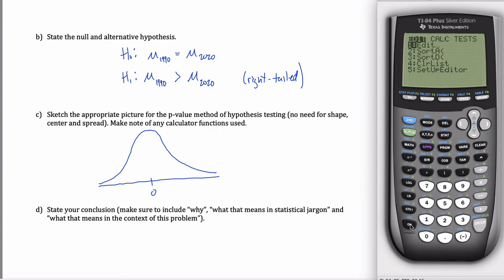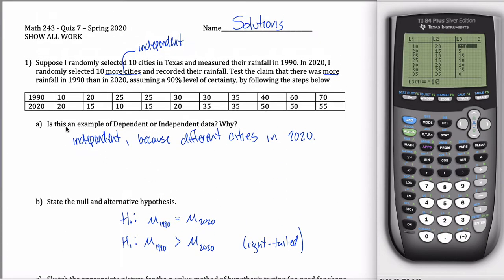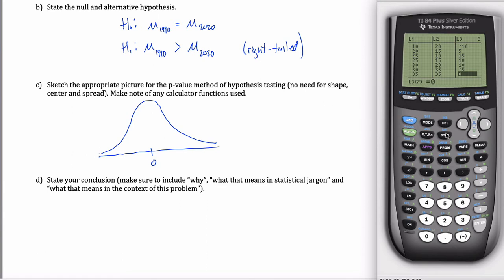What I'll do is first enter all my data. So, stat and then edit. And what I did is I typed 1990 data into L1 and 2020 data into L2. And what I want to do is hit stat and then go over to test. And this is going to be a two-sample t-test. Because, again, it's independent data. And I have the data itself.